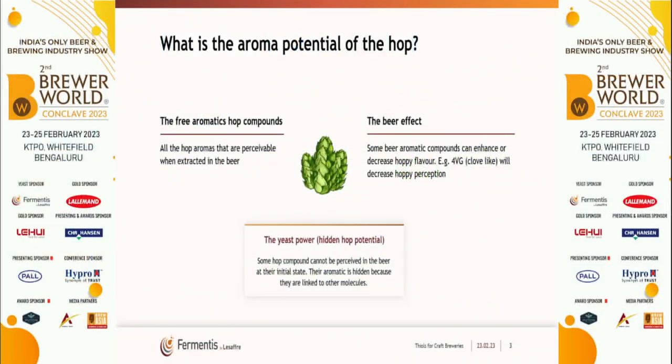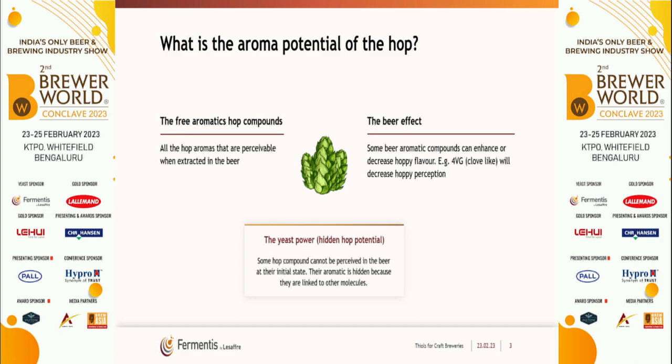When you put hops into boiling, late hopping, or dry hopping, you extract three forms of aroma compounds. Some aroma is already there inside the hop — you get it easily. However, some compounds exist in a potential or bound form — linked to other compounds — and you cannot sense them in the beer. Yeast activity is needed to release those bound compounds so you can perceive them.